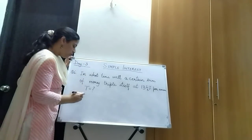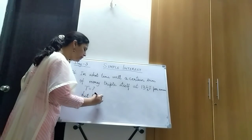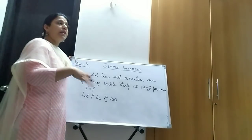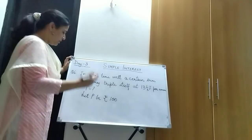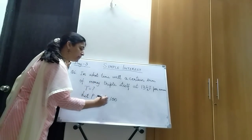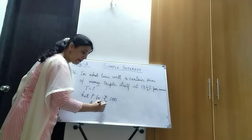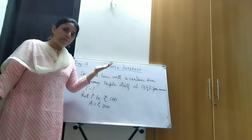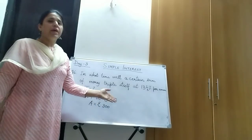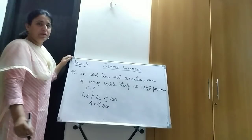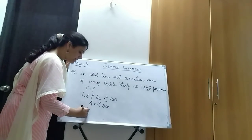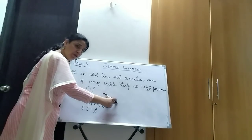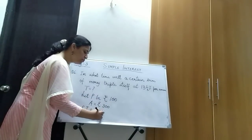Since we don't know the principal, let us take the principal as rupees 100. The money is becoming three times, so you are depositing ₹100 and getting back triple — that is ₹300. This ₹300 is the amount. Now, what is the interest? The simple interest equals amount minus principal, so SI = ₹300 − ₹100 = ₹200.